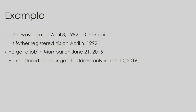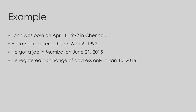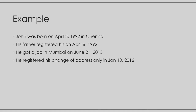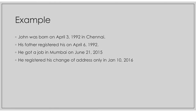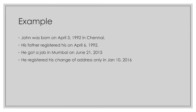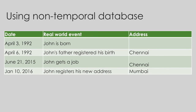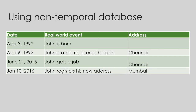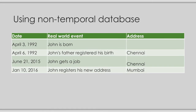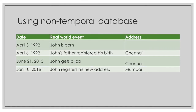Let's see an example of a person, John, who was born on April 3rd, 1992 in Chennai. His father registered his birth only after three days, that is on April 6th, 1992. He did his entire schooling in Chennai. Later, he found a job and shifted to Mumbai on June 21st, 2015, but registered his new address only on January 10th, 2016. Using a non-temporal database, John's address is entered as Chennai from 1992. When he registers his new address in 2016, the database gets updated and the address field shows Mumbai. Once updated, it may be difficult to find out exactly when he was living in Chennai and when he moved to Mumbai.